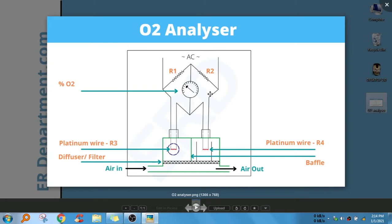We have a platinum wire here, and platinum wire R4 resistance. Okay, now let's see about this oxygen analyzer in detail.